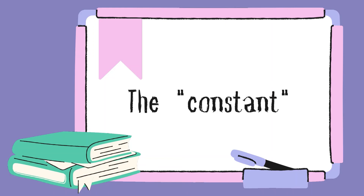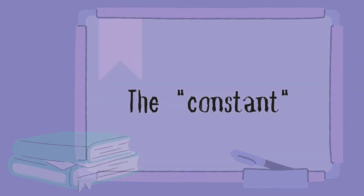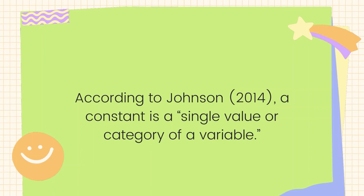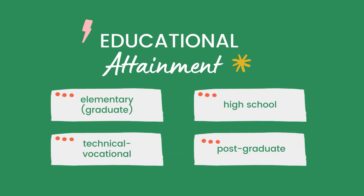Now, to better understand the concept of variable, let us talk about its direct opposite — that is, the constant. A constant, according to Johnson in 2014, is a single value or a category of a variable. To illustrate, the variable educational attainment is a marker of various constants: elementary, high school, baccalaureate, postgraduate, or technical vocational. Therefore, if a participant says that he is a high school graduate, that pertains to just one thing, hence a constant. Similarly, for the variable weight, which has many values, 50 kilograms pertains to a specific weight itself. Weight is a variable because it varies, while the constants — 50 kilograms, 55 kilograms, 60 kilograms, and so on — do not vary. In short, a variable is a set of things and a constant is one of those things. That's from Johnson in 2014, page 90.